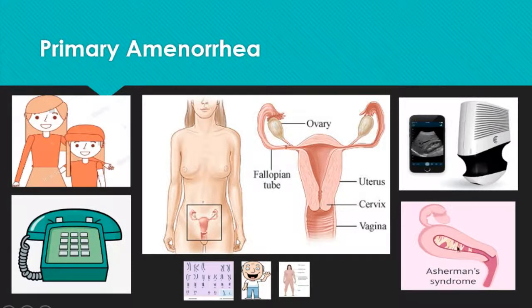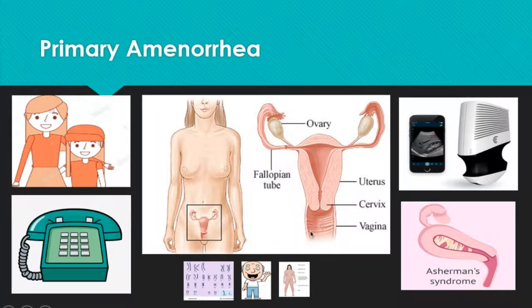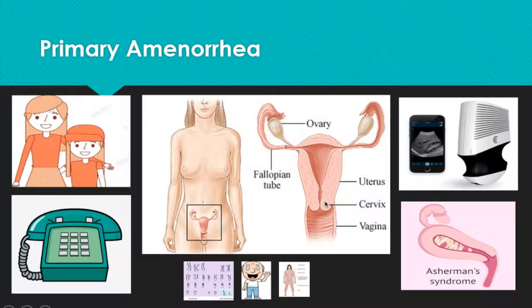For example, Asherman syndrome — inside the uterus, you could have these adhesions. Another condition is Turner syndrome, which presents with primary amenorrhea. Also, if you have an imperforate hymen, the products of menstruation will just collect behind it, and with each period it will add on and become more and more painful. The treatment for an imperforate hymen is incision and drainage, and you'd also like to get an ultrasound of the kidneys.